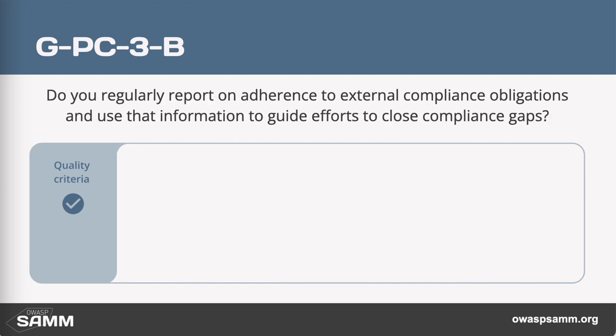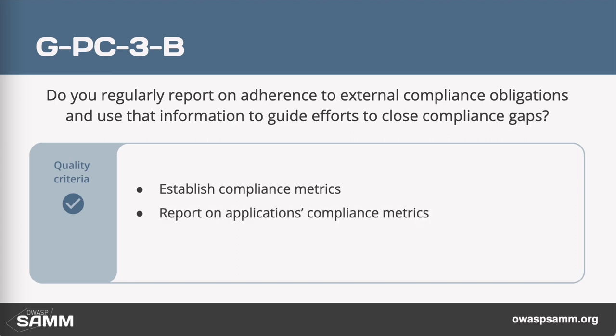Level three in this stream is going back to reporting and understanding as an organization where your compliance gaps are. That involves establishing compliance metrics and reporting them for all applications. Once you know the gaps, you can prioritize the gap remediation efforts.